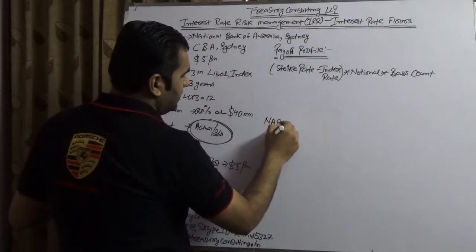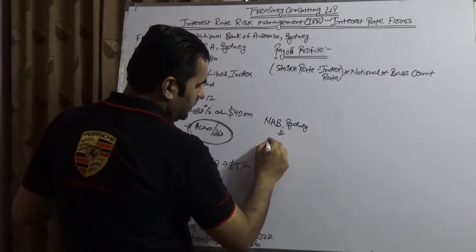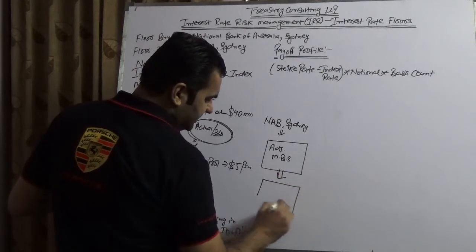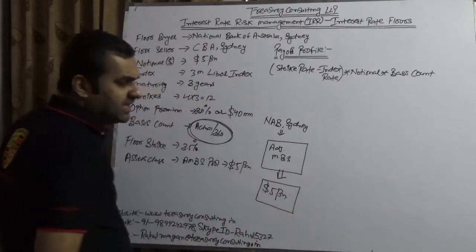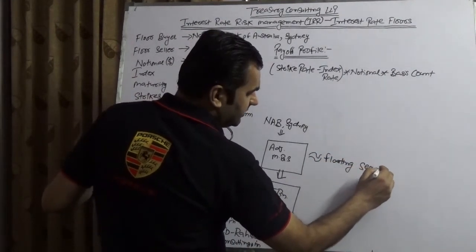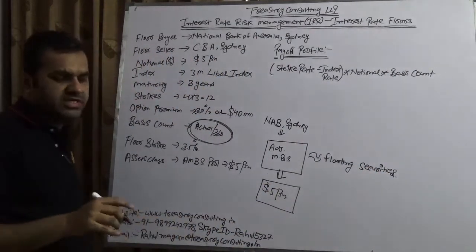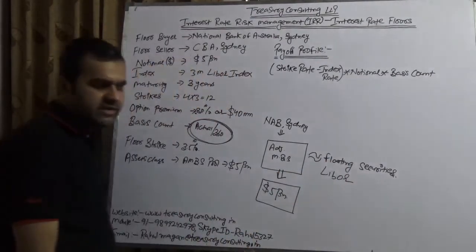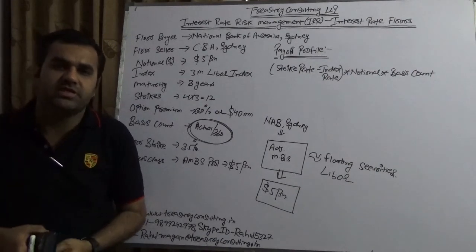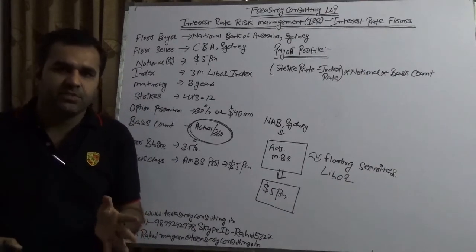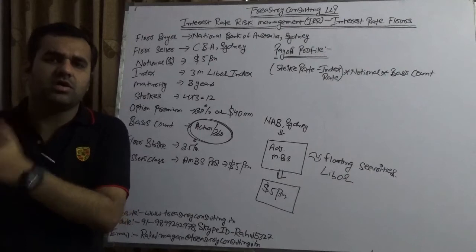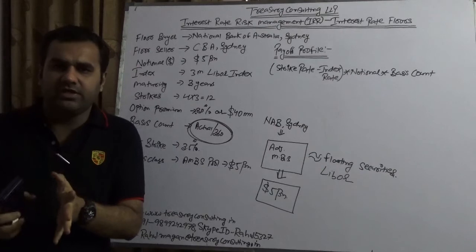This is the scenario: NAB Sydney is holding an Adjustable Mortgage-Backed Security pool of $5 billion, and the income of that pool is linked with floating securities, which in turn are linked with LIBOR. Since they are linked with LIBOR, their income would fluctuate. One of the reasons behind the 2008 financial crisis was that a huge amount of assets were linked with LIBOR — and with collateralization over collateralization linked to that LIBOR. When the tranches turned delinquent, everything vanished.